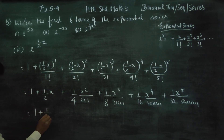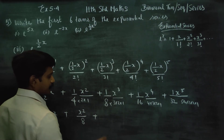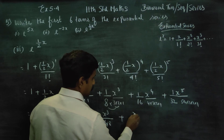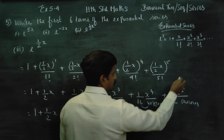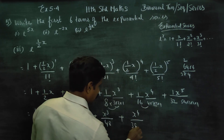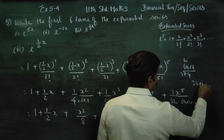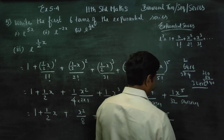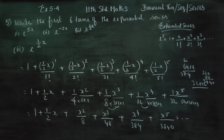Therefore your final answer will be: 1 plus x by 2 plus x square by 4 divided by 2 factorial — that is x square by 8 — plus x cube by 8 divided by 3 factorial — that is x cube by 48 — plus x power 4 by 16 divided by 4 factorial which is 384 — plus x power 5 by 32 divided by 5 factorial which is 3840. So the answer is 1 plus x by 2 plus x square by 8 plus x cube by 48 plus x power 4 by 384 plus x power 5 by 3840, and it goes on. This completes all three subdivisions.